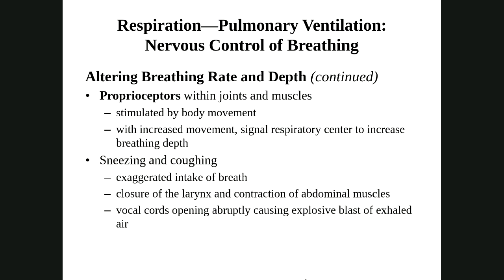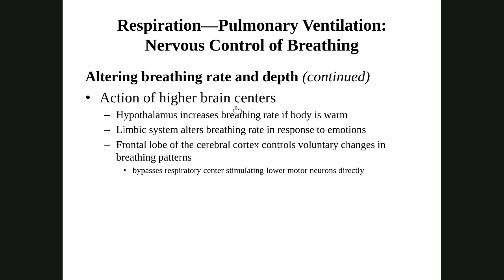Higher brain centers above the brainstem, like the hypothalamus, can change breathing rate based on temperature, just like it can change heart rate. The limbic system can also affect the respiratory centers, influencing breathing rate through emotions. Uniquely, the frontal lobe has the ability to make voluntary changes to breathing — right now I can voluntarily breathe super quickly. We can voluntarily change our breathing pattern, unlike the heart which we cannot voluntarily speed up or slow down.